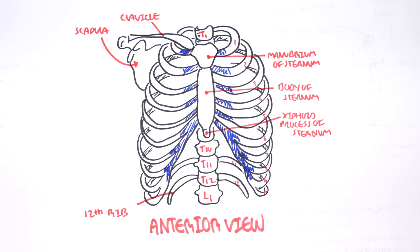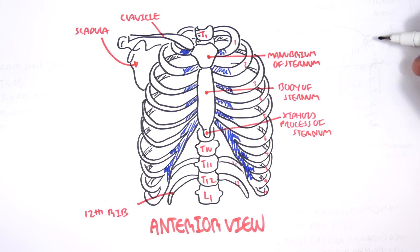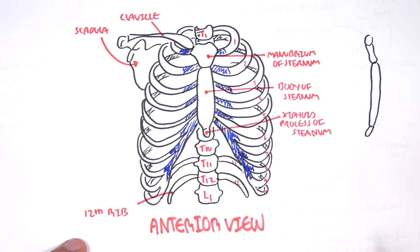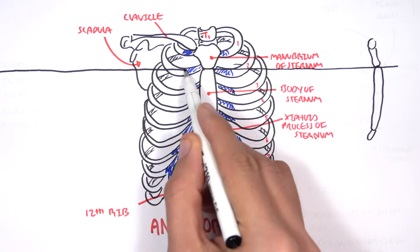Drawing the sternum from a side view now, it is important to appreciate an important landmark, which is marked by the sternal angle between the manubrium and the body of the sternum. This surface marking is also referred to as the angle of Louis.